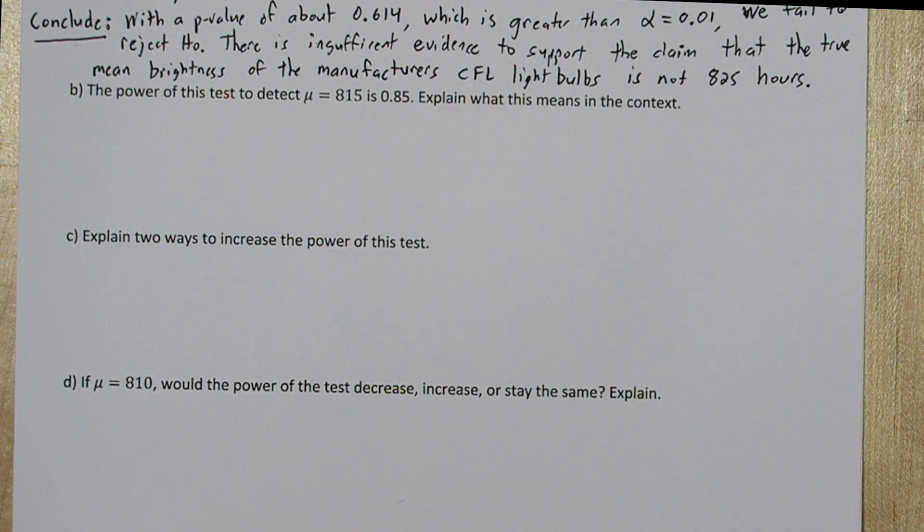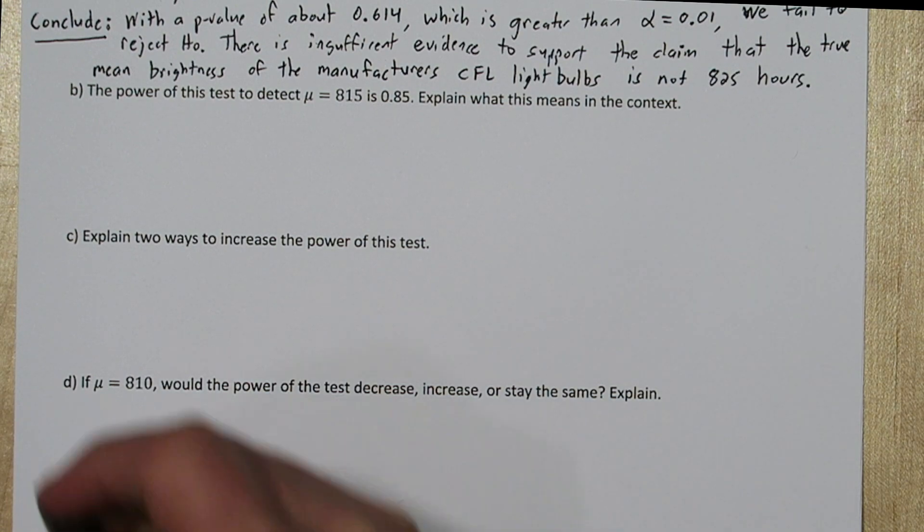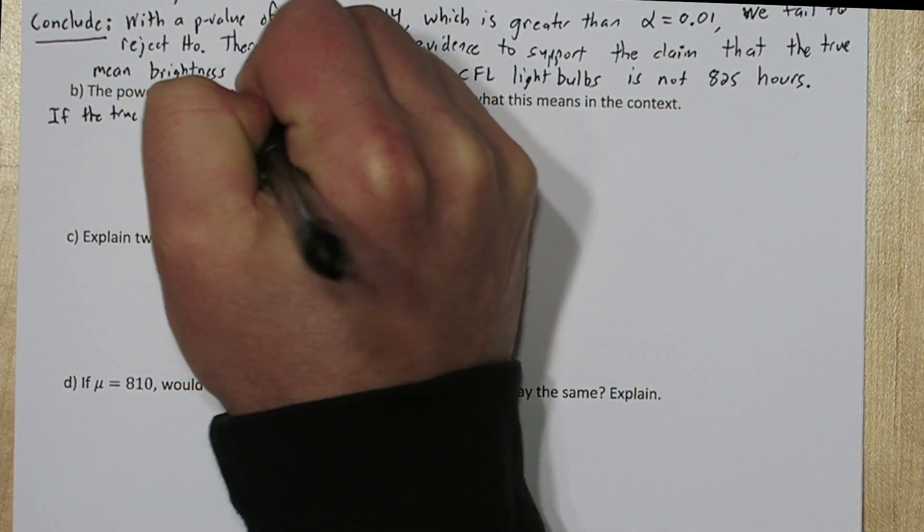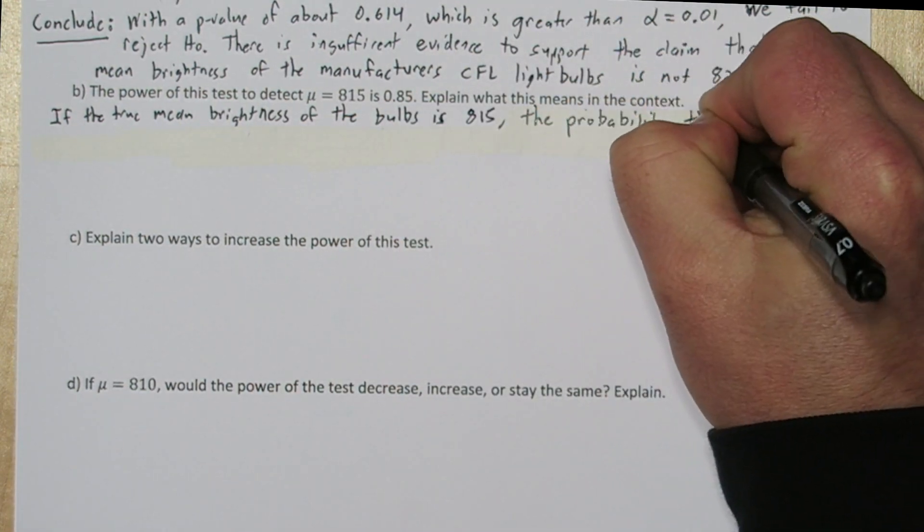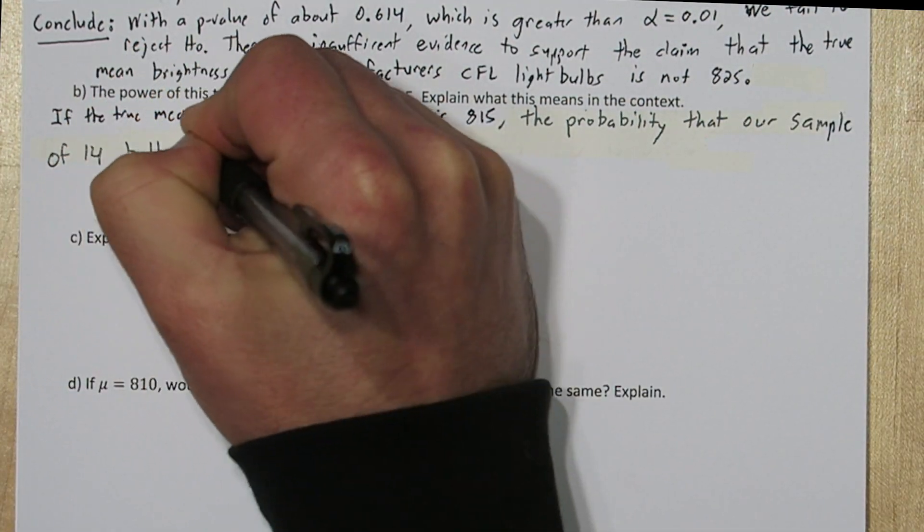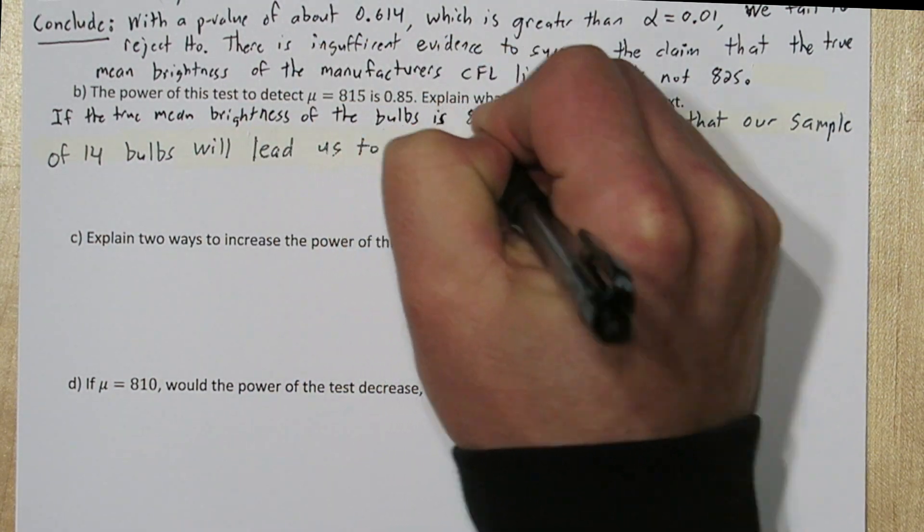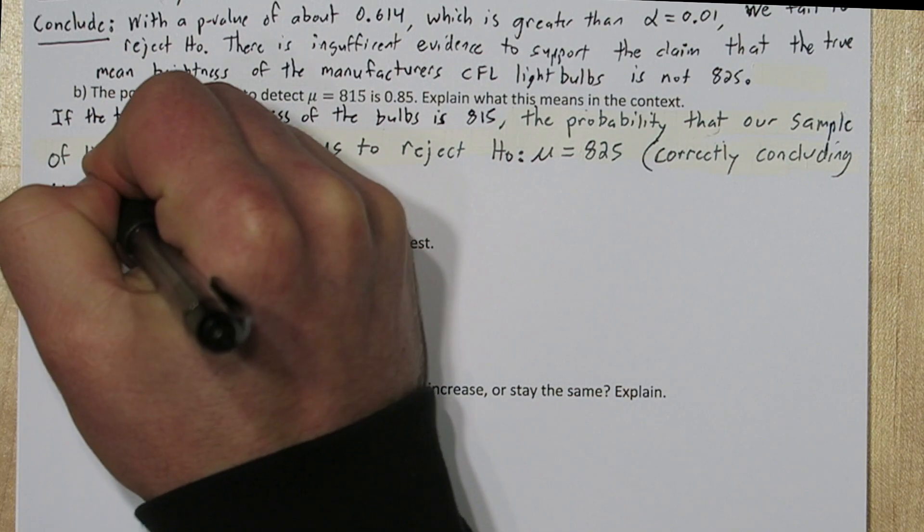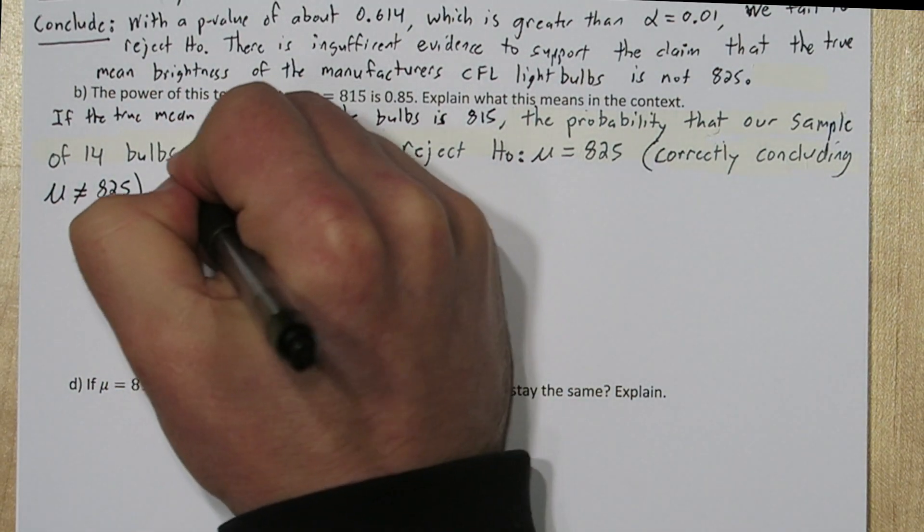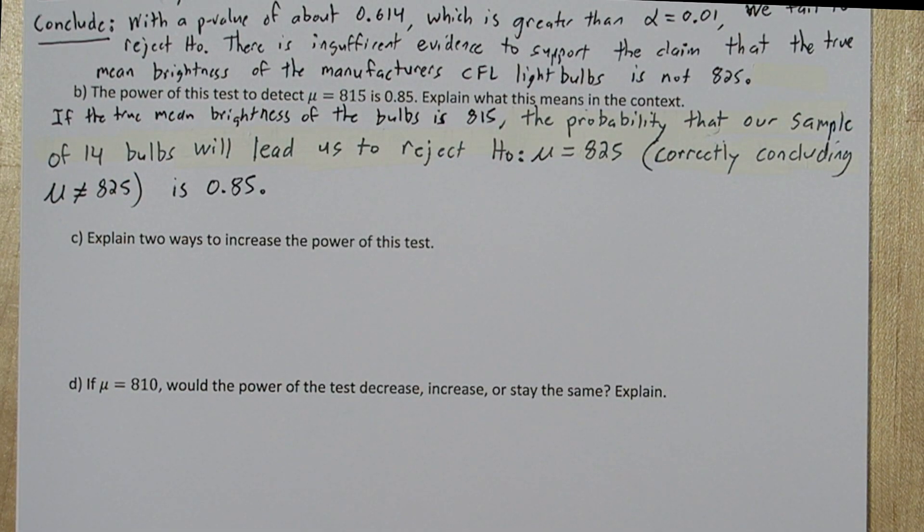Now to calculate power, you have to know the truth about the population. So suppose the true mean brightness of the bulbs is 815. The probability that our sample of 14 bulbs will lead us to reject the null hypothesis, that is to correctly conclude that the mean brightness is not 825, is 0.85. So I would consider this test fairly powerful. If the mean is 815, we have a pretty high probability of rejecting the null hypothesis.